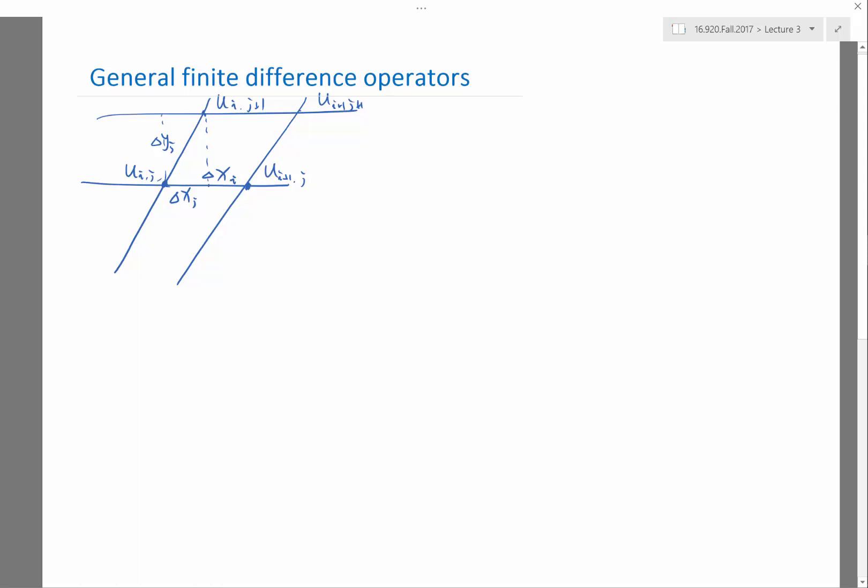And I want to approximate, for example, a certain derivative. How do you do that? You combine two things: Taylor series analysis and solve a small matrix.